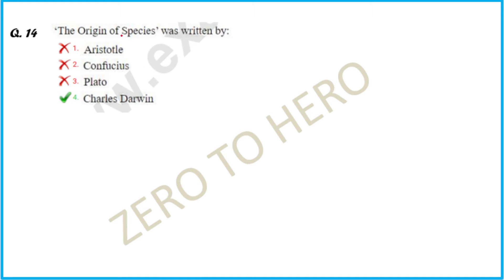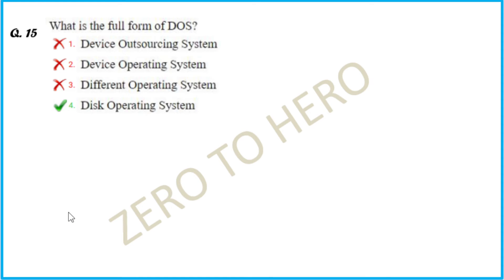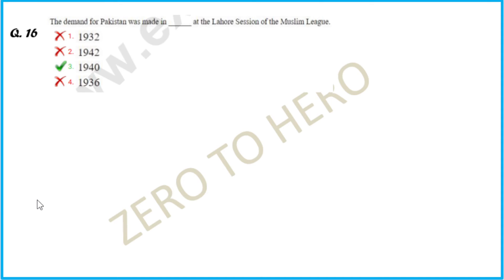Arjuna's Rise was written by author Charles Torby. What is the full form of DOS? Disc Operating System. The demand for Pakistan was made at the Lahore session of the Muslim League.